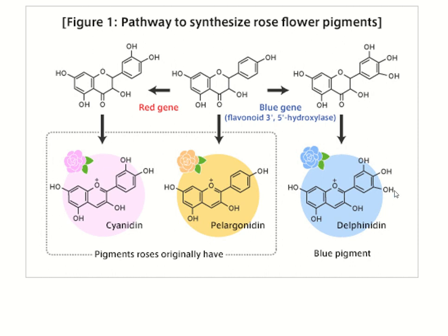Delphinidin has three OH groups. If two OH groups are removed, that compound is called pelargonidine. Similarly, looking at the difference between pelargonidine and cyanidine — structurally, you will find only one additional hydroxyl group difference between them.